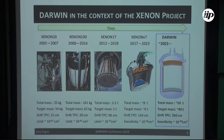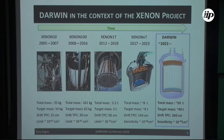Darwin is considered the ultimate liquid xenon direct detection experiment: a total mass of 50 tons and a drift TPC of 2.6 meters, designed to reach a sensitivity of 10⁻⁴⁹ cm², corresponding to the neutrino floor. As the size of the experiment increases — including LUX and PandaX — the background rate also decreases, which is critically important for detection.